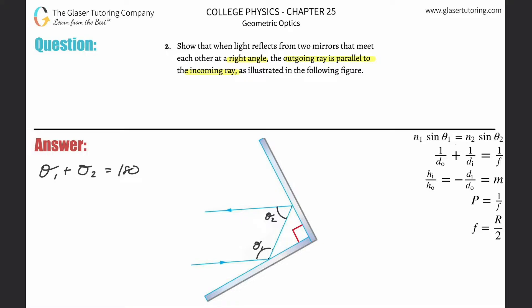This creates a right triangle in here. I'll call this angle theta three, and this one theta four. Now there's another relationship: all the angles inside this triangle have to add up to 180 degrees. Since this angle in here is already 90 degrees, that means theta three plus theta four must equal 90 degrees. So: theta three plus theta four equals 90.